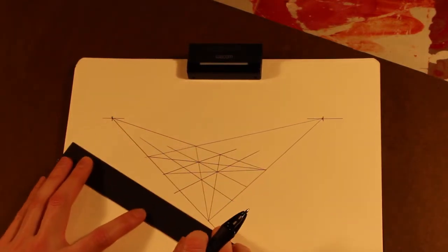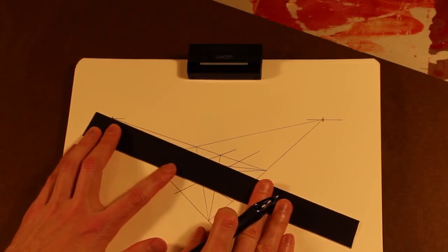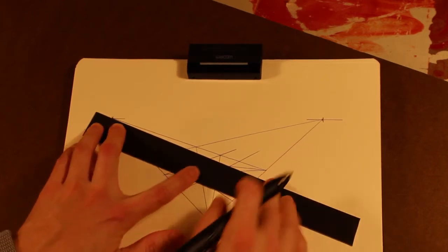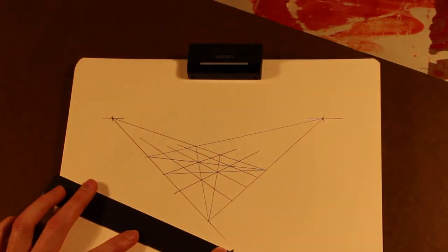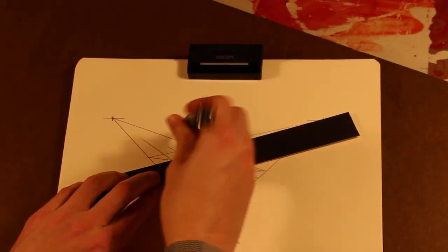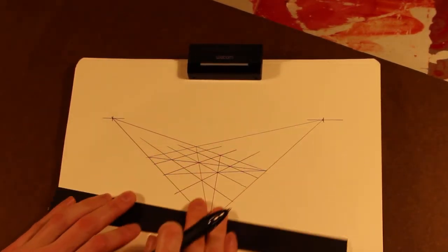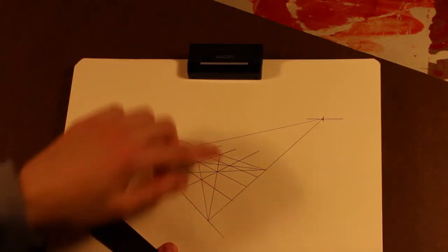This can get confusing, which is totally normal. You're drawing a lot of construction lines here. So there it is, subdivided. You've got a grid of 16 here.